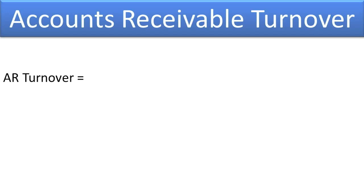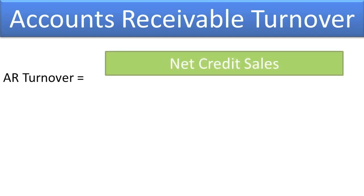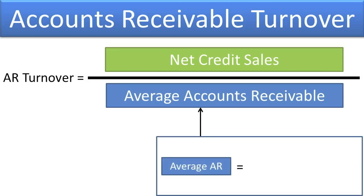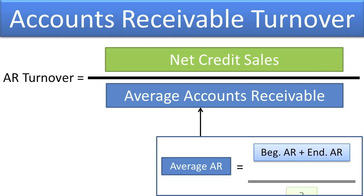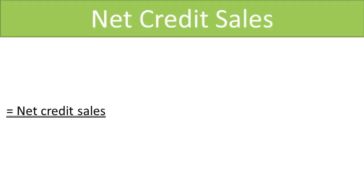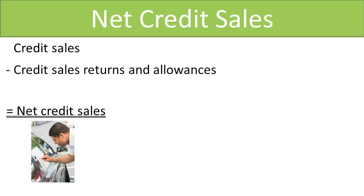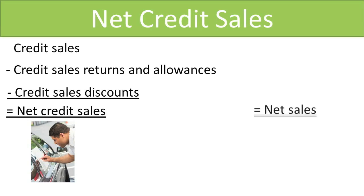How do you compute the Accounts Receivable Turnover Ratio? The Accounts Receivable Turnover Ratio is computed as follows: net credit sales divided by average accounts receivable, where average accounts receivable equals beginning accounts receivable plus ending accounts receivable, divided by two. Net credit sales represent all sales made on account, i.e. credit sales, less any returns and allowances on credit sales, and less any sales discounts on credit sales. Having said that, many users will use the net sales figure directly off the income statement to compute the AR Turnover Ratio, because the net credit sales figure is not readily available.